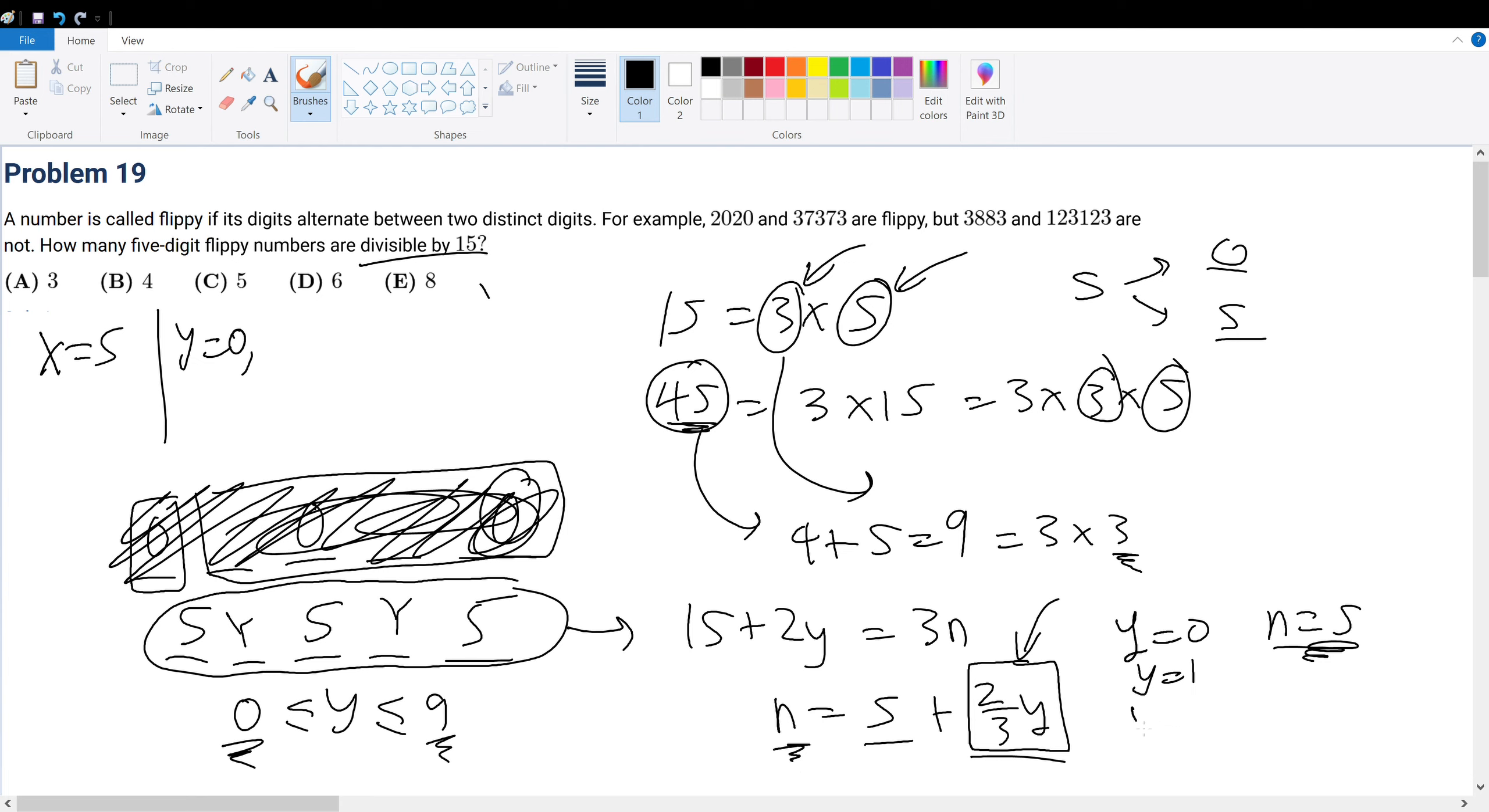Obviously, y must equal 3, so n equals 7. But then again, y can equal 6, y can equal 9. So we have 0, 3, 6, and 9. We're done because that is the range of y that we can go to.